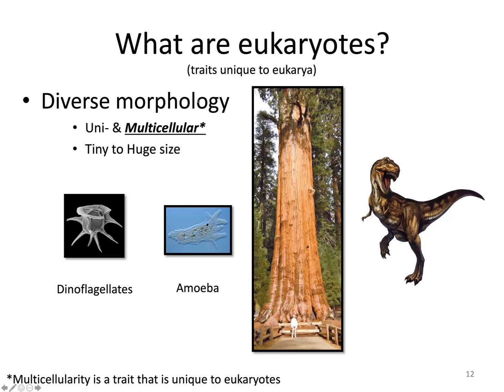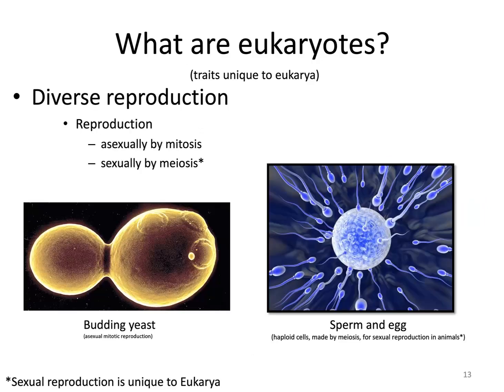Multicellularity is underlined with an asterisk because multicellularity is a trait unique to eukaryotes. Eukaryotes are the only truly multicellular organisms — the only domain that is truly multicellular. Bacteria and archaea, the prokaryotes, are not multicellular.